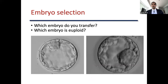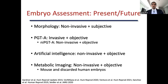Looking at these two images, which embryo would you transfer, and which embryo is euploid? Without determining the ploidy status of the embryo, we base the decision of which embryo to transfer by the day of development and morphologic designation by the embryologist. This is something all REI clinicians think about — in what order should we transfer an embryo to give our patients the highest chance of a live birth? Embryo assessment can be performed in different ways. Morphology is the traditional way of embryo assessment, which is non-invasive but subjective.